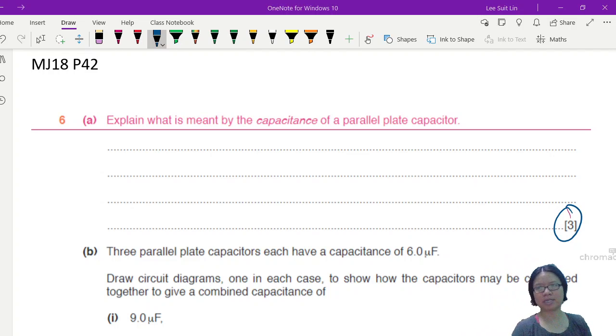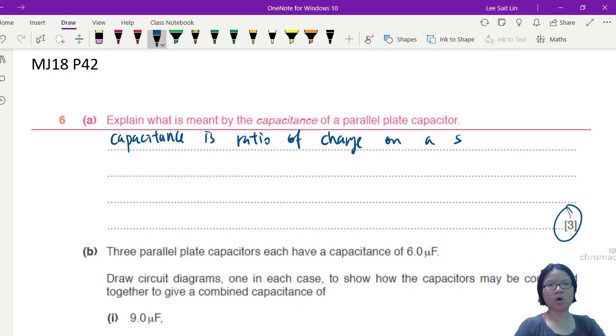Here is the full set of the explanation of what is capacitance. You will start off with the actual equation or the actual definition. Capacitance is the ratio of charge on a single or on one plate of a capacitor to the potential difference.